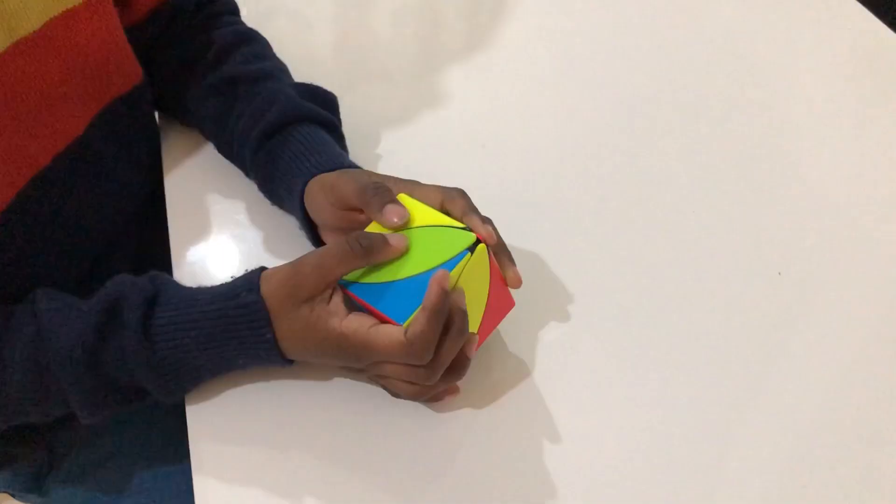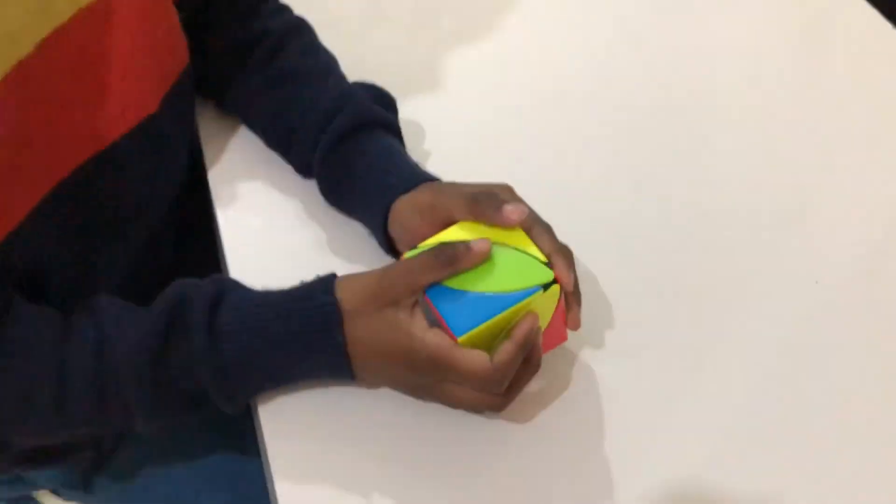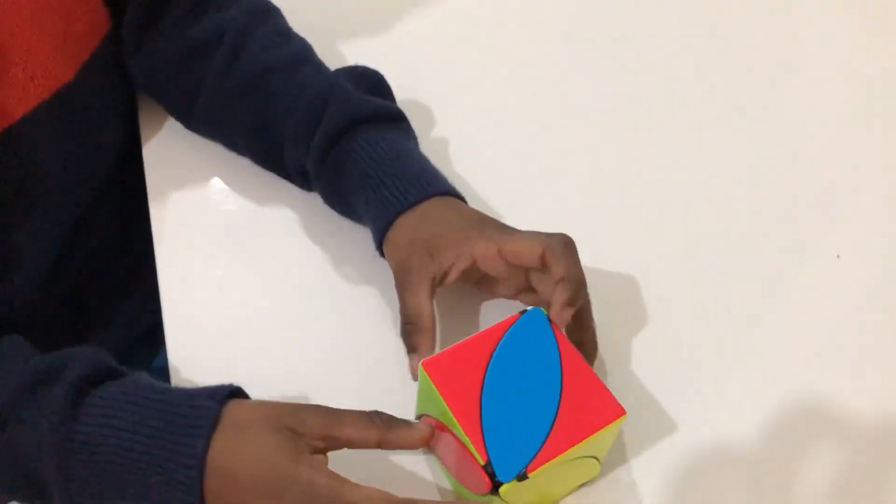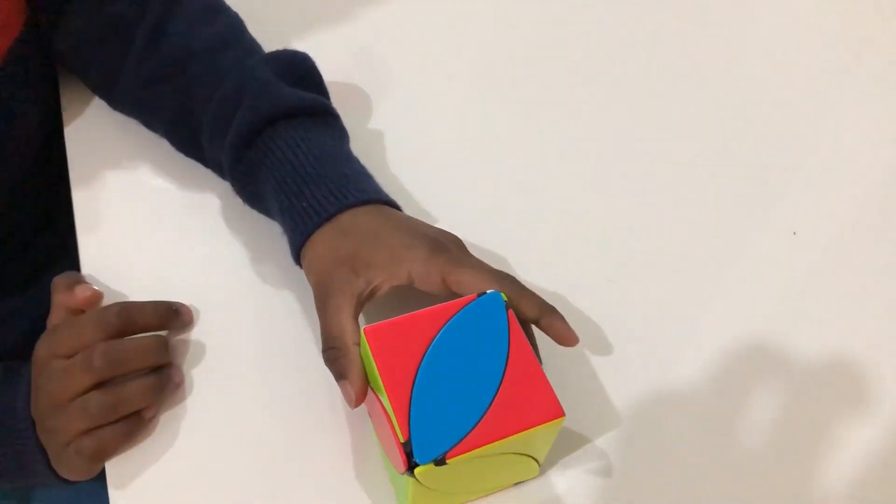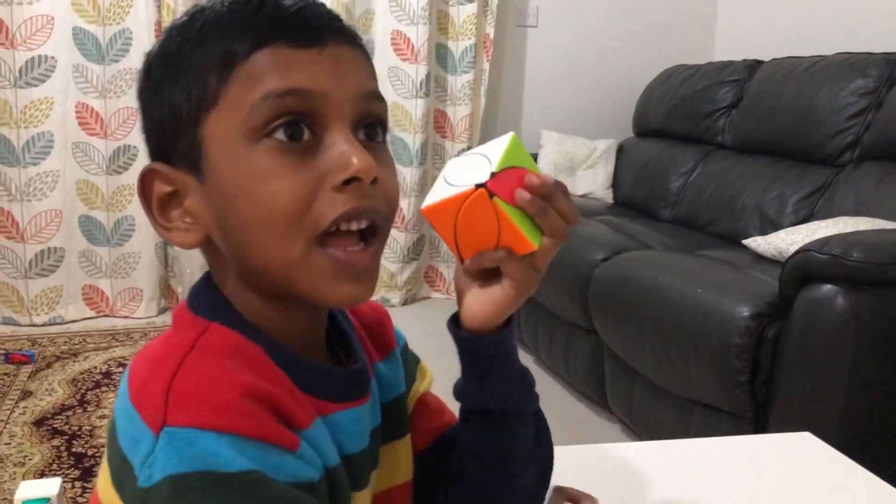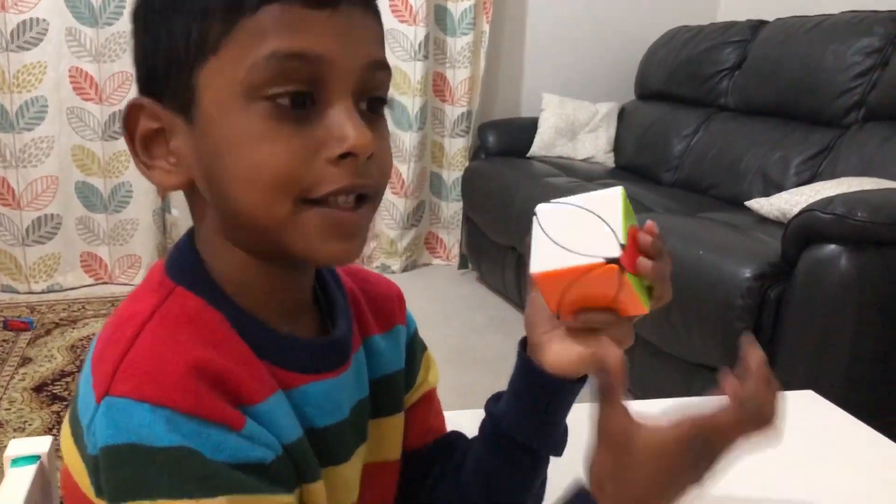Now let's solve the back side of white which is yellow. Similarly, let's preserve other sides.